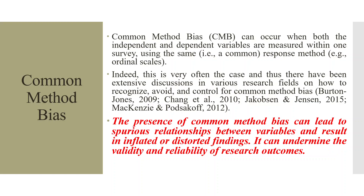Common method bias can occur when both the independent and dependent variables are measured within one survey using the same response method. This is very often the case, and thus there has been extensive discussion in various research fields on how to recognize, avoid, and control for common method bias. The presence of common method bias can lead to spurious relationships between variables, resulting in inflated or distorted findings, and can undermine the validity and reliability of research outcomes.